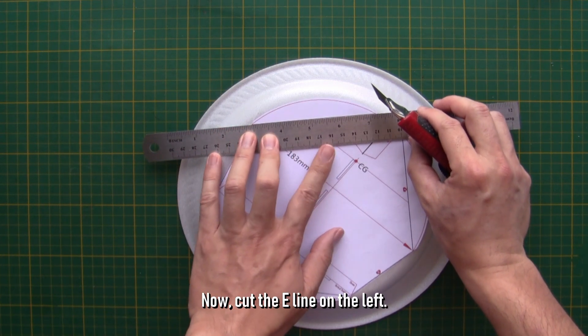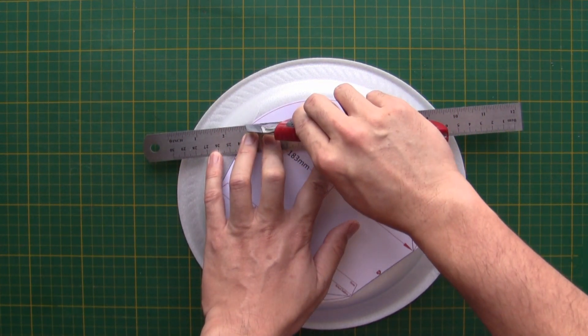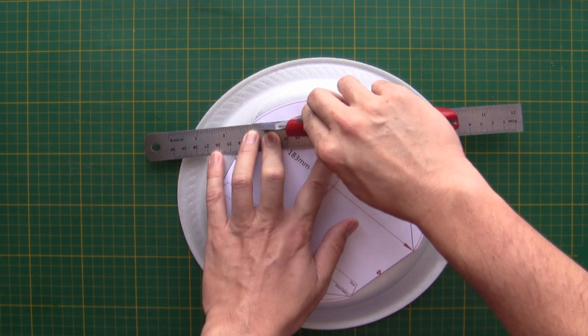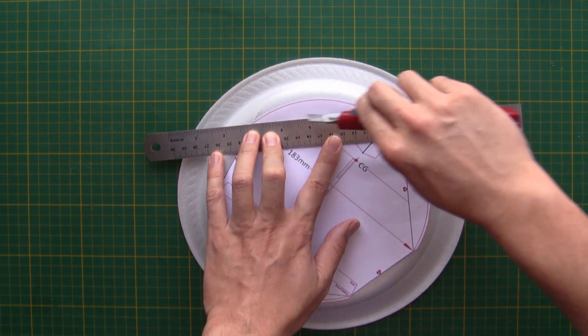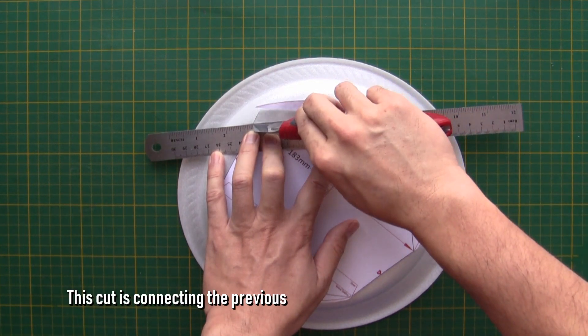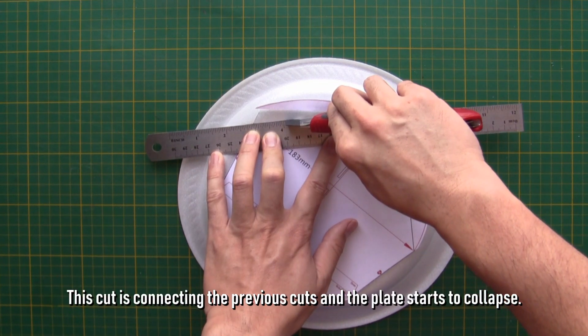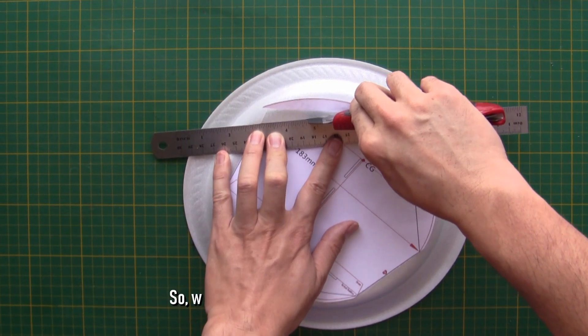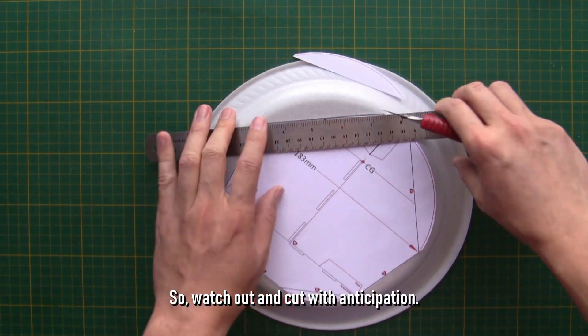Now, cut the E line on the left. This cut is connecting the previous cuts and the plate starts to collapse. So, watch out, and cut with anticipation.